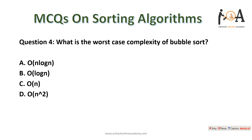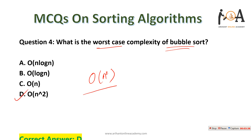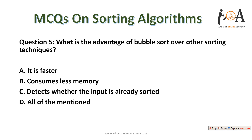The next question: what is the worst case complexity of bubble sort? Bubble sort worst case time complexity is O(n²). Option D is the correct answer — a very easy question you must remember.